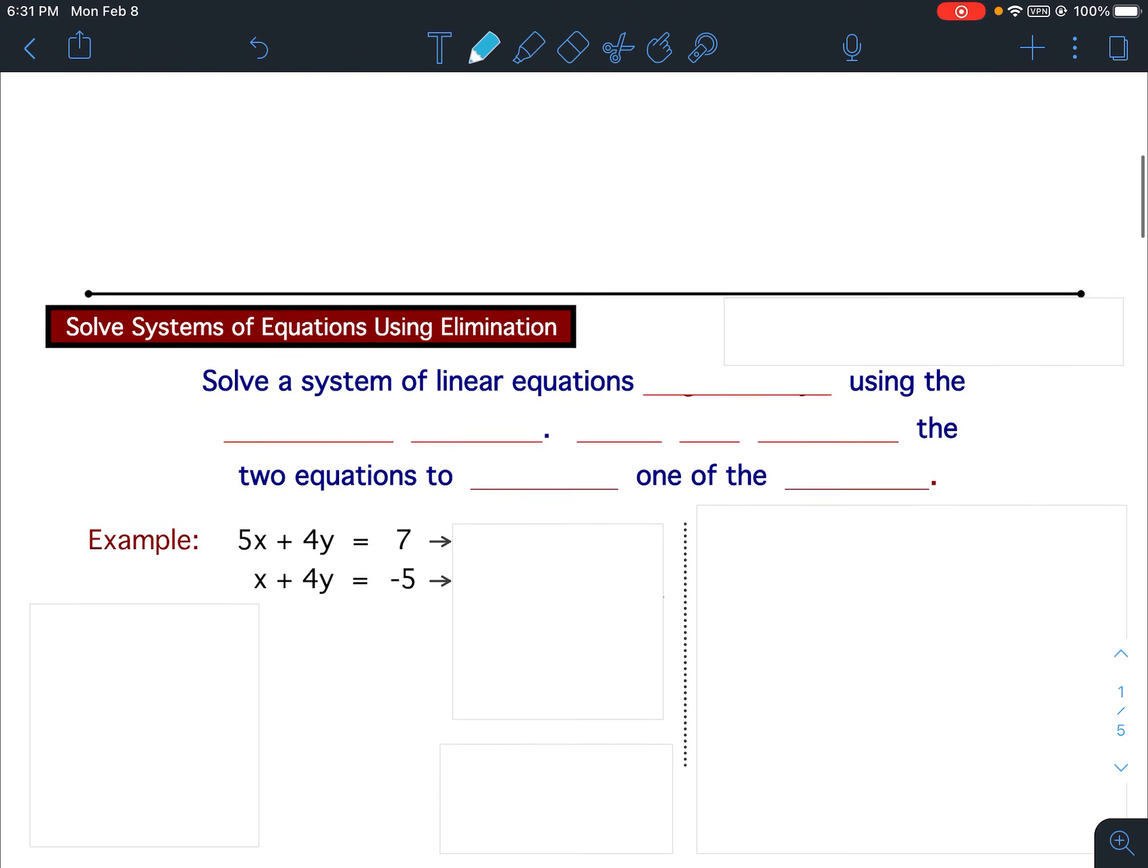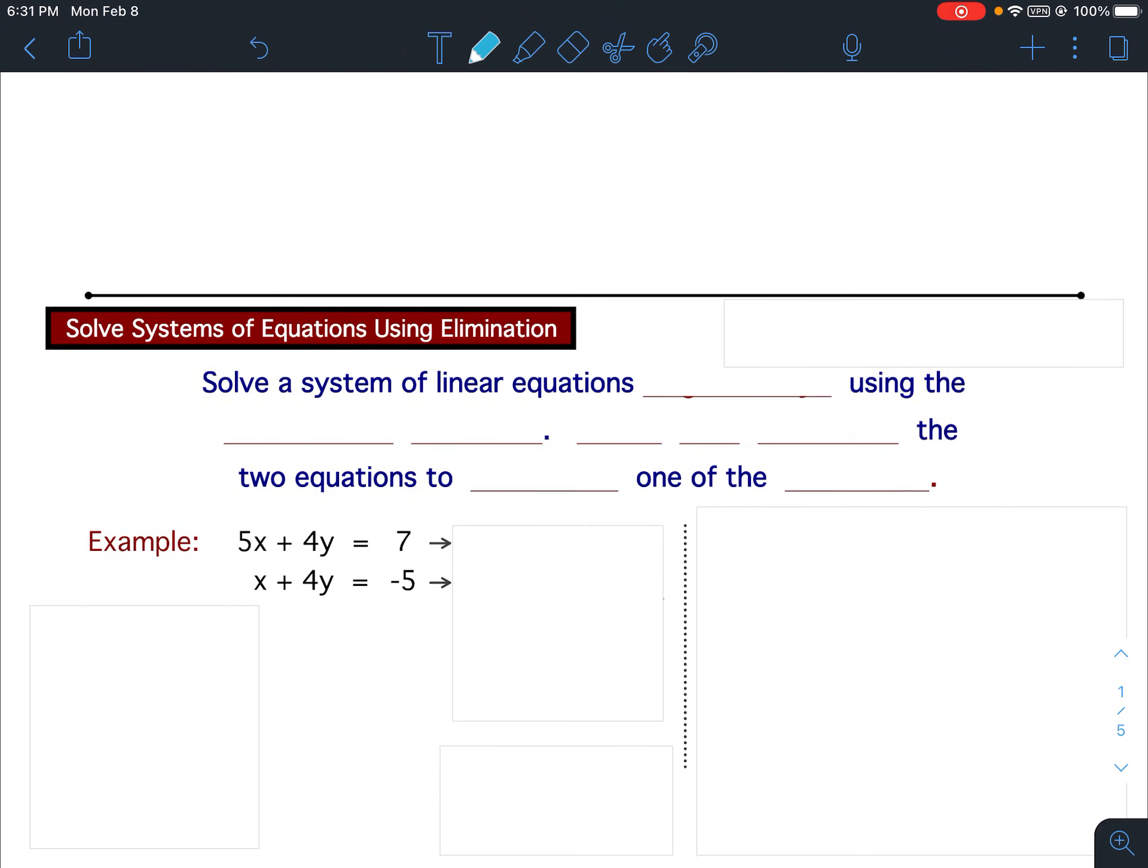Before we begin the notes on elimination, I need to ask you what happens when you have 3x minus 3x? Well, they would cancel out, eliminating the x term. Or if you had negative 5y plus 5y, again, they would cancel out, eliminating the y term.